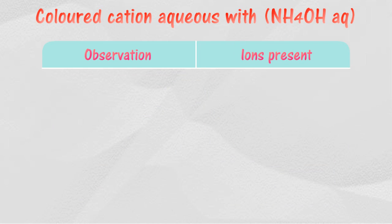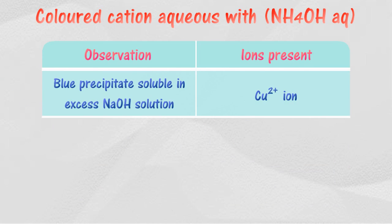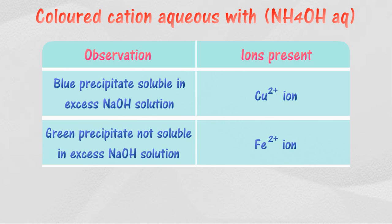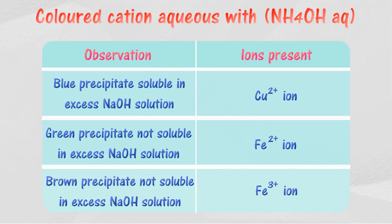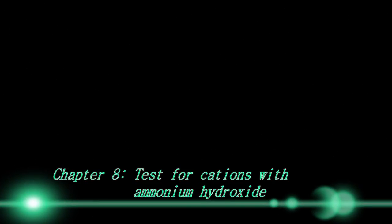For colored cations in aqueous solution with ammonium hydroxide: if a blue precipitate forms that is soluble in excess ammonium hydroxide solution, copper ion may be present. If a green precipitate forms that is not soluble in excess ammonium hydroxide solution, iron(II) ion (Fe2+) may be present. If a brown precipitate forms that is not soluble in excess ammonium hydroxide solution, iron(III) ion (Fe3+) may be present.